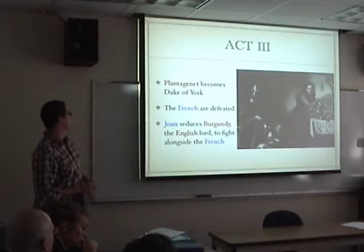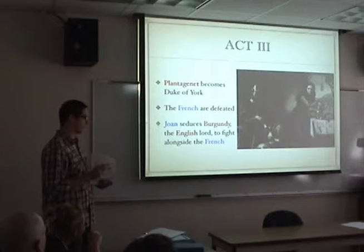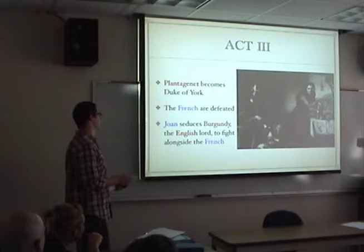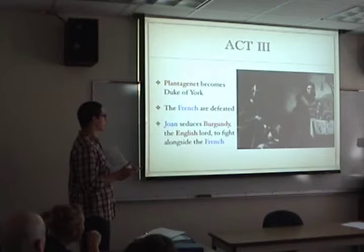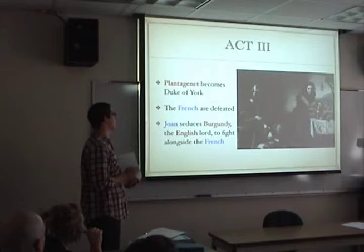In Act 3, Plantagenet becomes Duke of York after making a petition to the king — this is how the War of the Roses starts between him and Somerset, since he had a right to nobility he discovers from his dying uncle. Joan then decides to seduce Burgundy, an English lord, to fight for the French again, since he was originally a French lord.